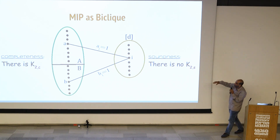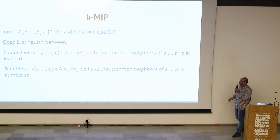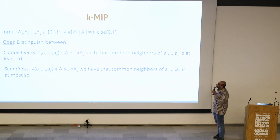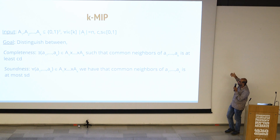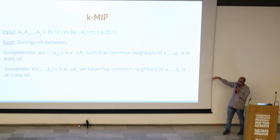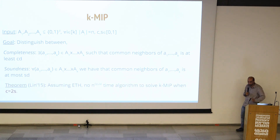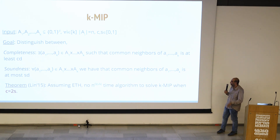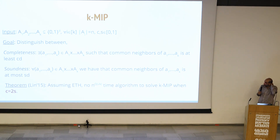What if we go a step further and instead of two sets we have K sets? This is a K-version where you have K sets of vectors A1 to AK, and you want to distinguish: in the completeness case, there is a point in each Ai such that the number of common neighbors is at least C times D; in the no case, for any K-tuple the number of common neighbors is at most S times D. Remarkably, we know from a completely different technique that assuming ETH, there is no algorithm running in time N to the omega of square root of K that can solve this even with a gap of 2. This is due to Lin, predating the distributed PCP framework.